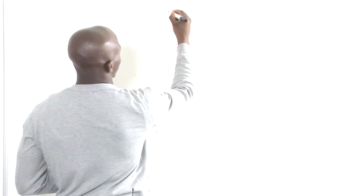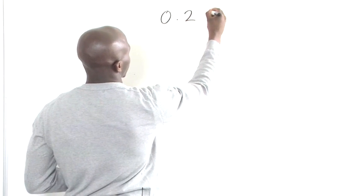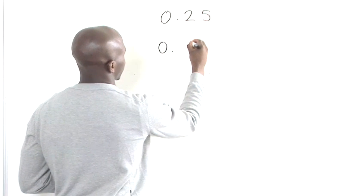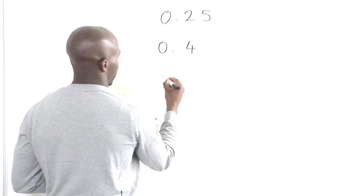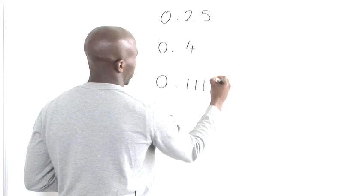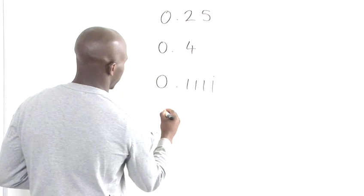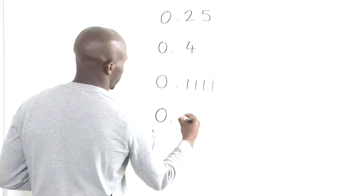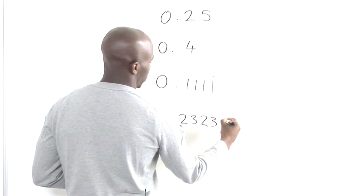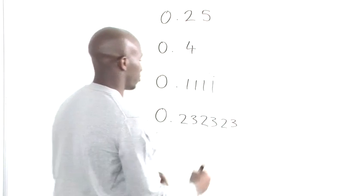The first thing we want to do is set out our decimals that we need to convert. So we will take 0.25, we will take 0.4, we will take 0.1111 recurring, and we will take 0.2323 recurring.